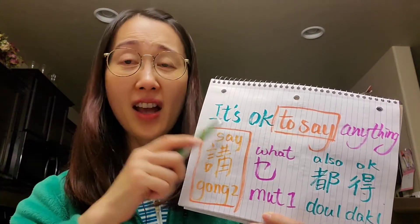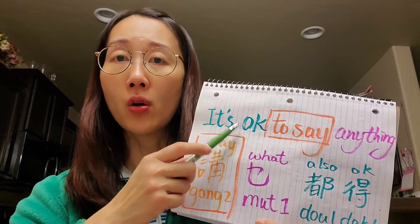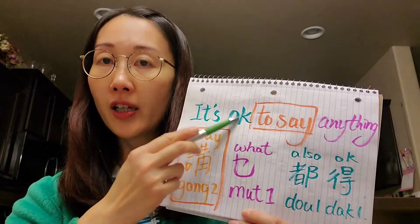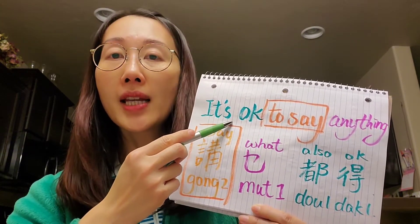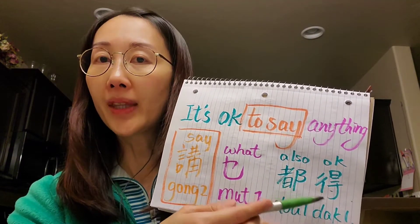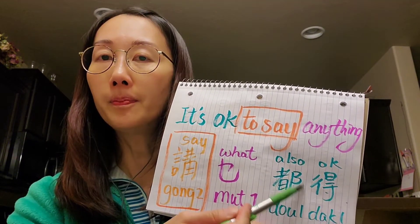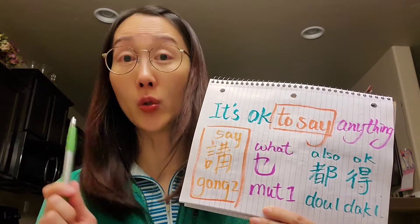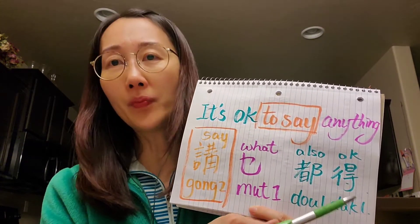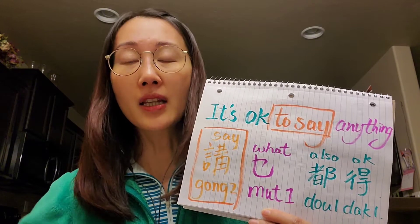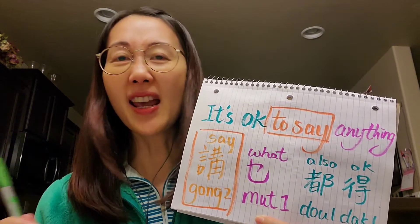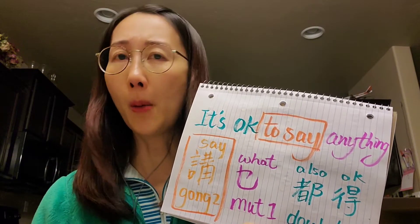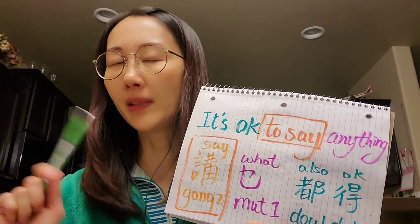How about the negative — 'it's not okay to say anything'? We turn this part into negative. We put 唔 here, making it 都唔得, which means 'not okay.' So 'it's not okay to say anything' is 講乜都唔得.